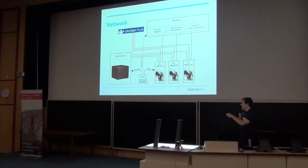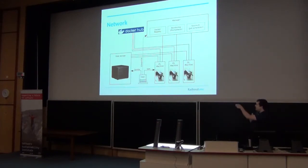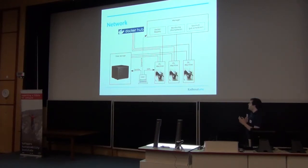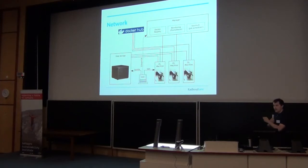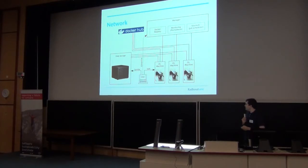Here is the network architecture we currently use. We have a big data store, and deep learning machines that access it. Each deep learning machine can access the internet and therefore Docker Hub, where you can find pre-configured images for doing deep learning. Then we have a management node which supplies some useful extra functionality, for example monitoring a local Docker registry where you can put your own research images, and workload management.